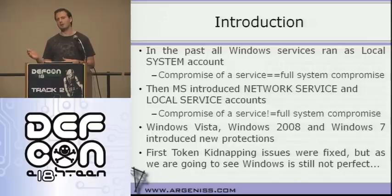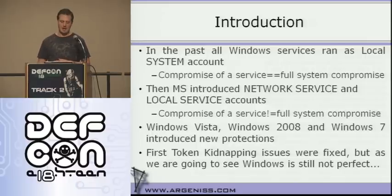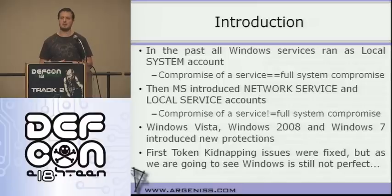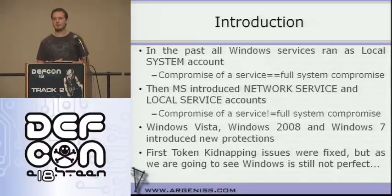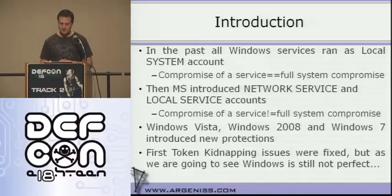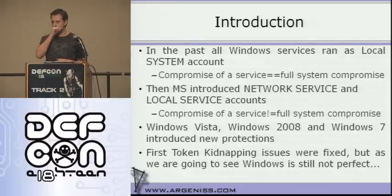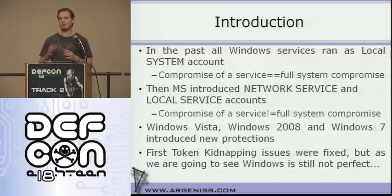Then with Windows 2003 and XP, Microsoft introduced a couple of new user accounts called Network Service and Local Service. These accounts have restricted privileges — they have fewer privileges than the local system account. So in theory, they started to run some system services under these accounts to prevent a situation where one of these services was exploited, meaning that didn't imply the whole system would be compromised.